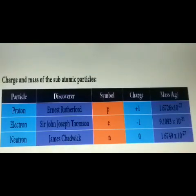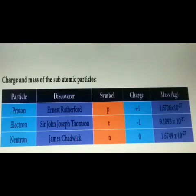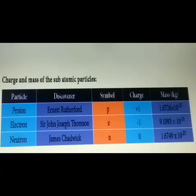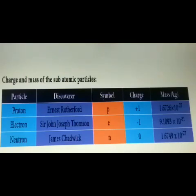Now let us see the charge and mass of the subatomic particles. Proton was discovered by Rutherford; its symbol is 'p', its charge is +1, and its mass is 1.67 × 10⁻²⁷ kg. Electron was discovered by J.J. Thomson; its charge is −1 and its mass is 9.1 × 10⁻³¹ kg. Neutron was discovered by James Chadwick; its charge is neutral and its mass is 1.67 × 10⁻²⁷ kg.